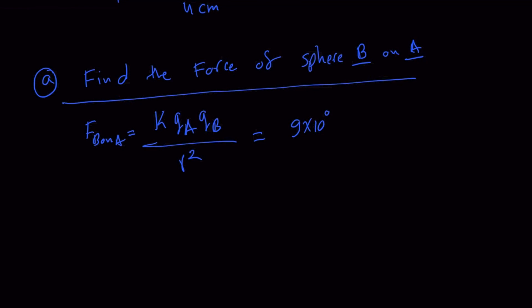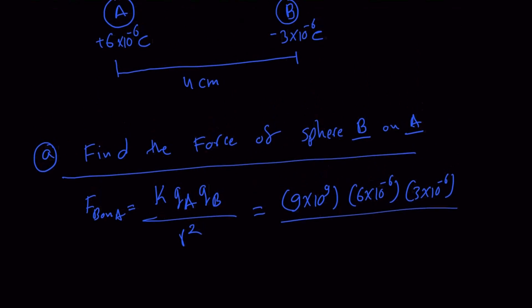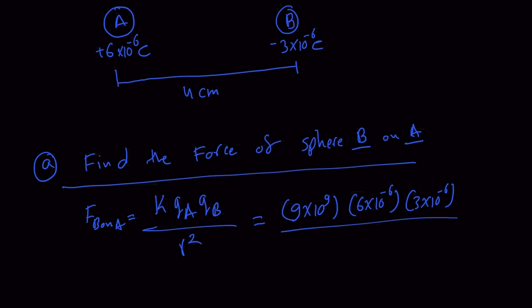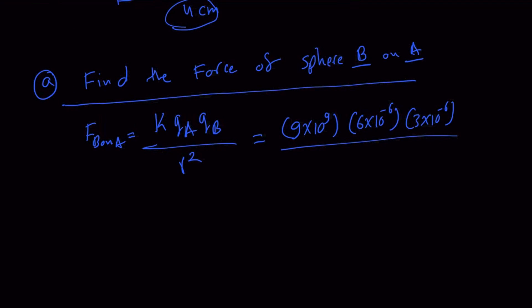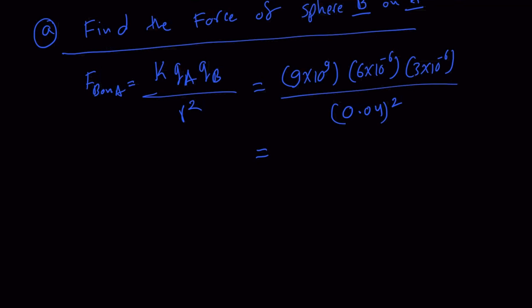Plugging in the values: k is 9 multiplied by 10 to the power of 9, charge A is 6 multiplied by 10 to the minus 6, charge B is 3 multiplied by 10 to the minus 6 — we drop the minus sign because this equation gives the magnitude. The distance is 4 centimeters, converted to 0.04 meters, then squared. Because A is positive and B is negative, B pulls A toward it. Crunching the numbers gives 1.0 multiplied by 10 to the power of 2 newtons, which is 100 newtons.